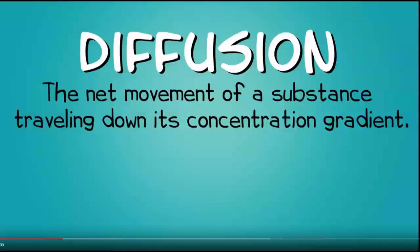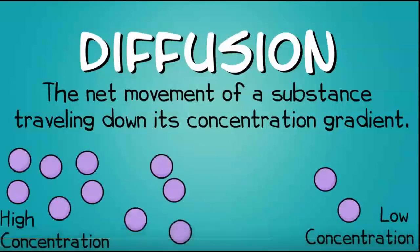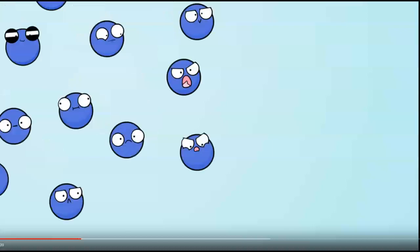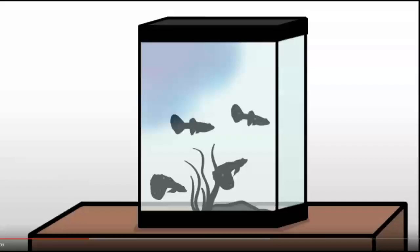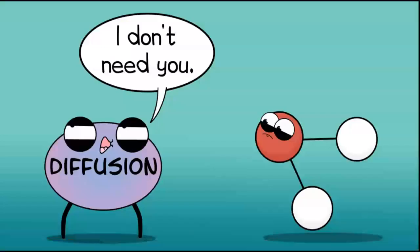Diffusion is when the net movement of a substance travels down its concentration gradient. That means it moves from a high concentration to a low concentration. The molecules traveled in the water through diffusion. The high concentration of molecules, which is where they were dropped, spread to areas of low concentration in the water. Pretty soon, the water had a uniformly blue appearance as the molecules eventually became evenly dispersed. Diffusion doesn't just happen in water.